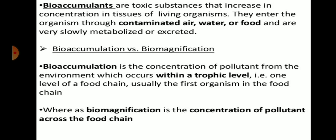These pollutants enter organisms via food, air, and water and are very slowly metabolized or excreted, as there are no enzyme systems in living organisms for the degradation of these heavy metals and pollutants. So pollutants and heavy metals accumulate in the body of living organisms. The key difference: bioaccumulation is the concentration of pollutant from the environment occurring within a trophic level.